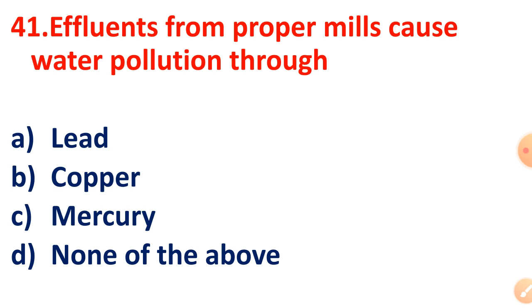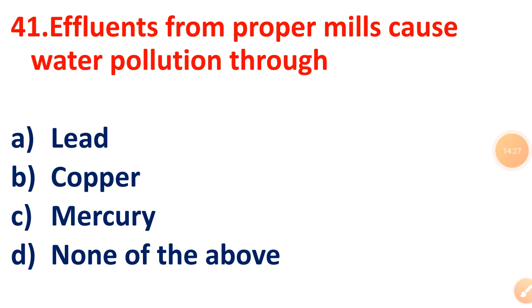Question 41: Effluents from paper mills cause water pollution through what? The answer is Mercury, Option C.